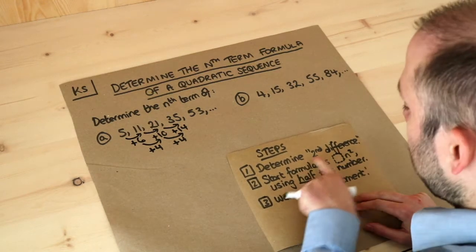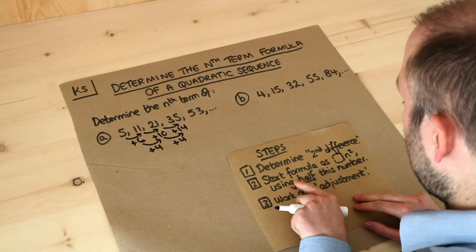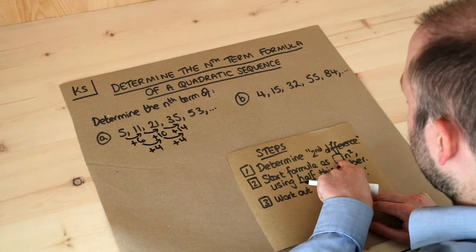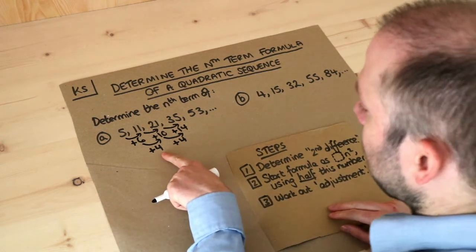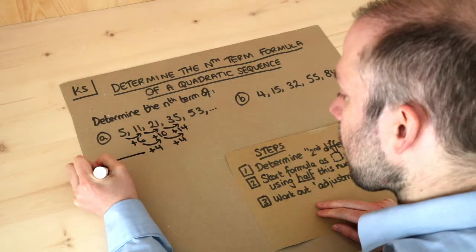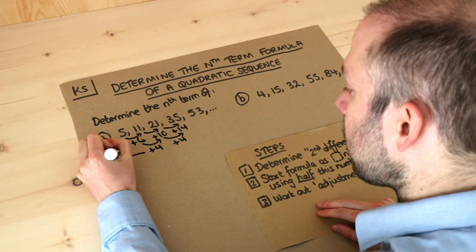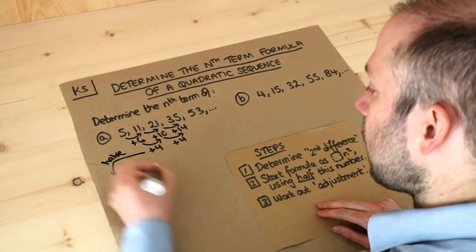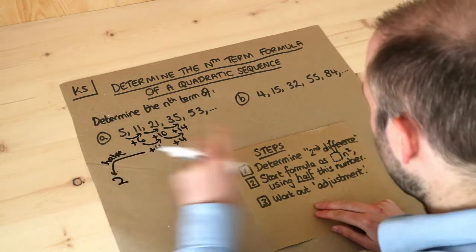Now we've determined the second difference and completed step one. We're going to start our nth term formula with something times n squared, where we halve the second difference. Half of four is two, so we start our formula with 2n².